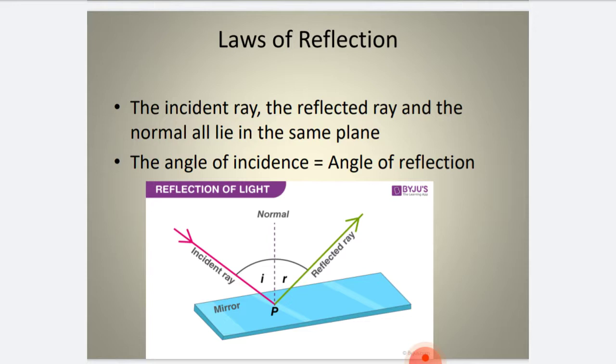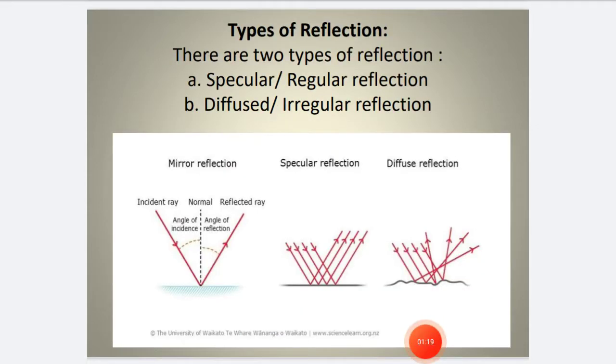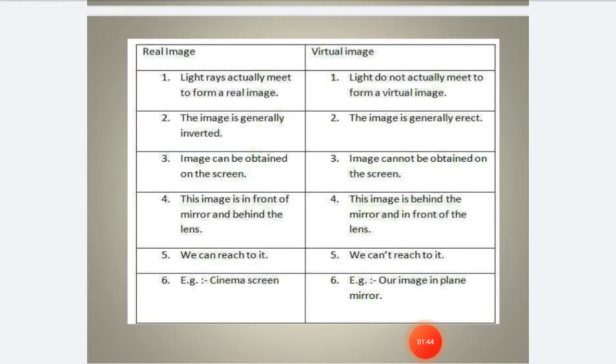The second law: the angle of incidence is equal to the angle of reflection. There are two types of reflection - specular or regular reflection, and diffused or irregular reflection.